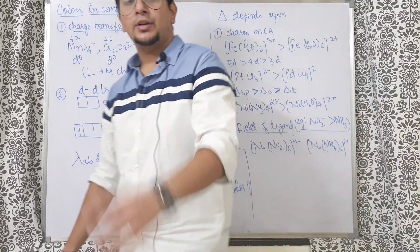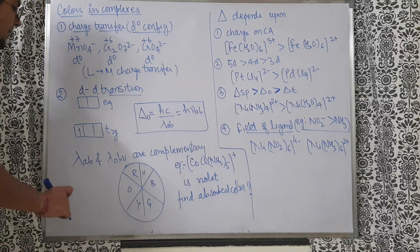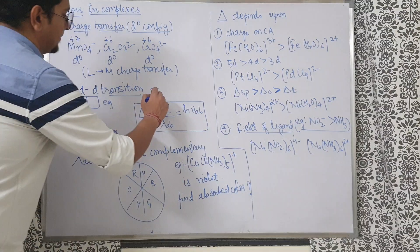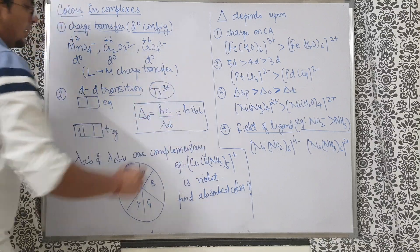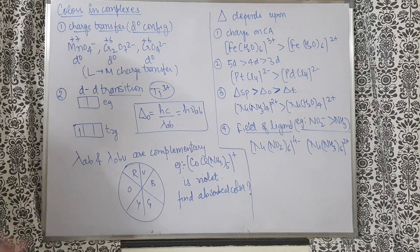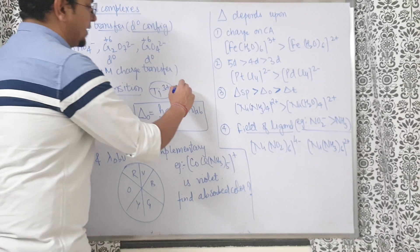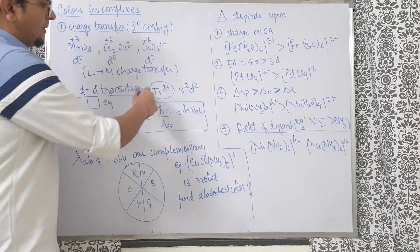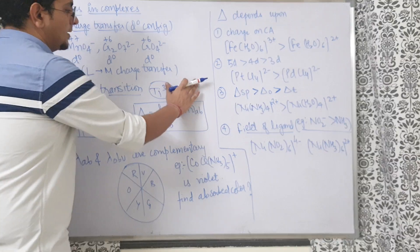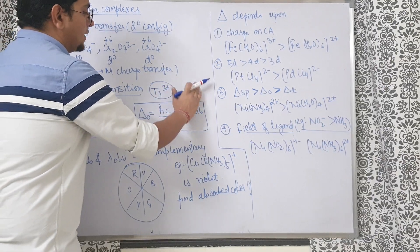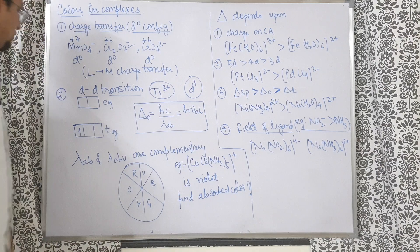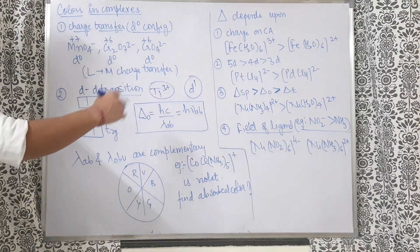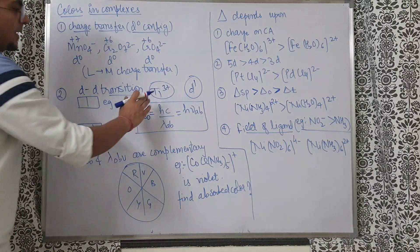The second reason for color is d-d transition. For example, Titanium (atomic number 22) has an s2d2 configuration. For Ti³⁺, two s electrons and one d electron are removed, giving a d1 configuration. This is why Ti³⁺ complexes show a purple color.